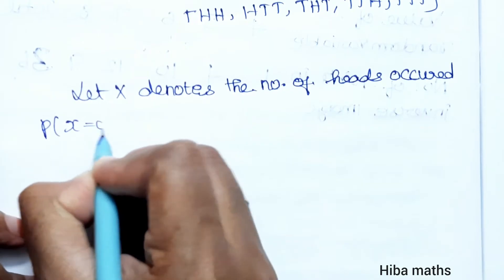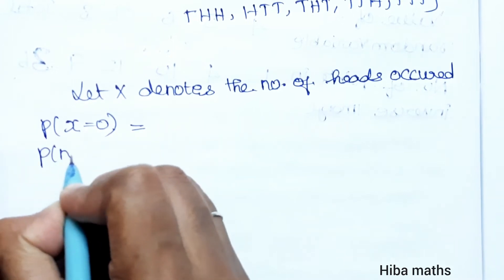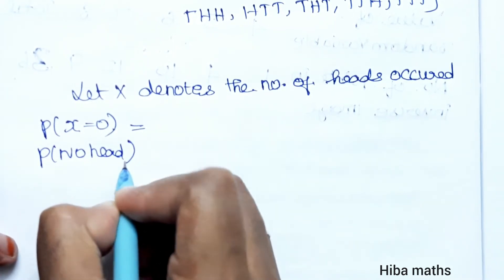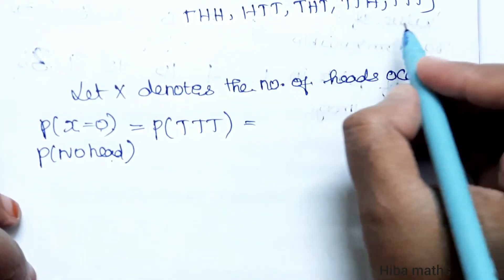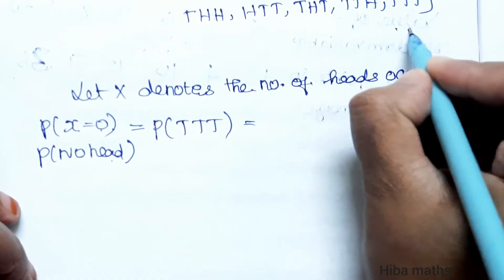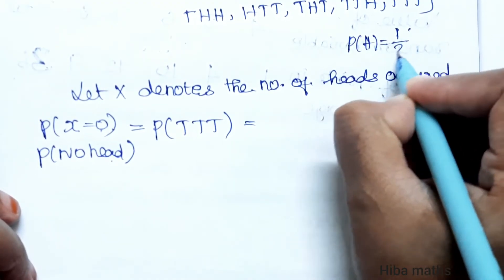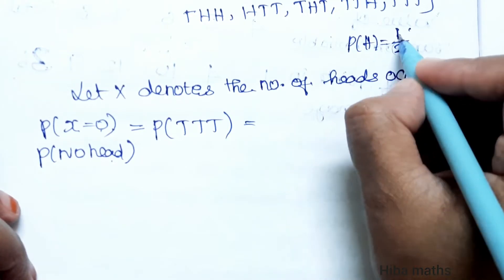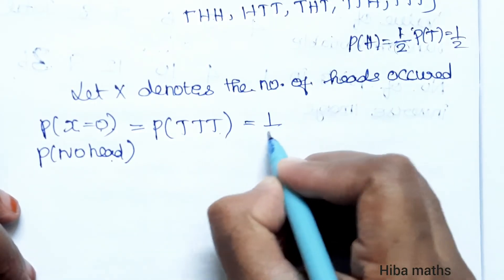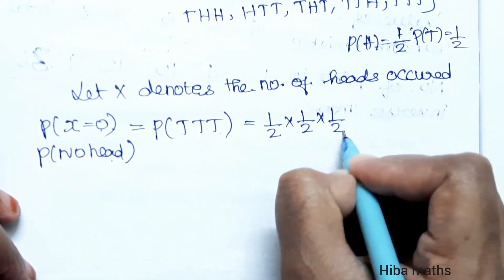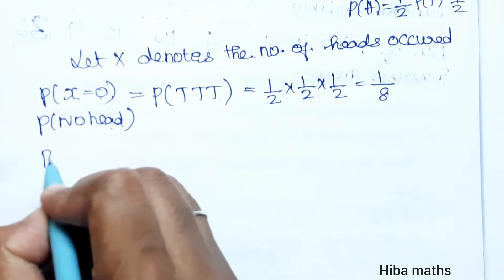P(X = 0): no heads at all, meaning all tails — TTT. The probability of each coin showing tail is 1/2, so P(X = 0) = 1/2 × 1/2 × 1/2 = 1/8.